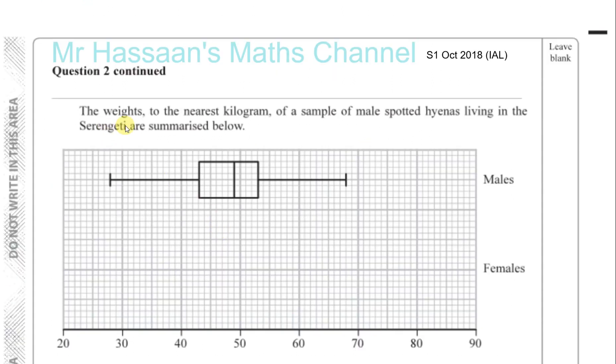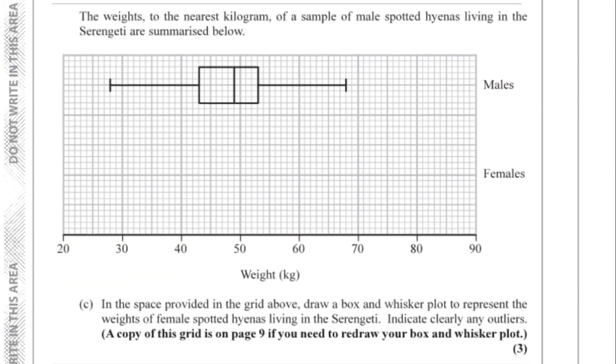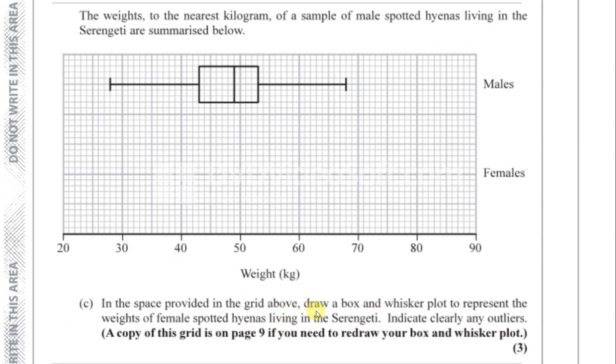And the next question, it says, The weights, the nearest kilogram of a sample of male spotted hinders, are summarized below. Okay, so I've got here box and whisker plot. In the space provided in the grid above, draw a box and whisker plot to represent the weight of female spotted hyenas living in Serengeti. Okay, so we need five bits of information for this. We need the lowest value, lower quartile, median, upper quartile, highest value within the range, and also any outliers. So let's look at what we've got. We've got Q1 and Q2 and Q3. We've got the lower value, we've got the upper value, and we've got the outlier.